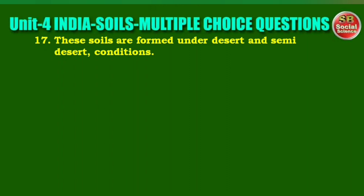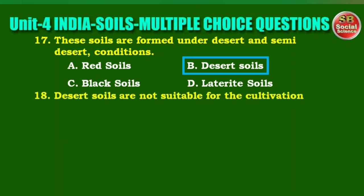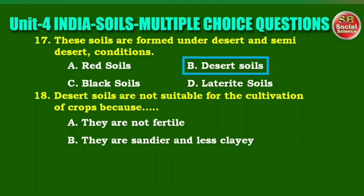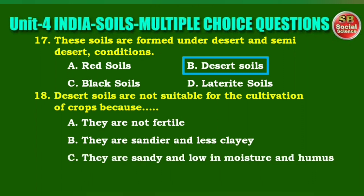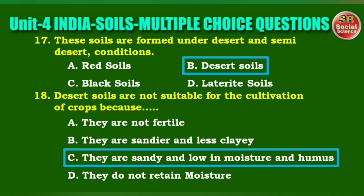Next question: the soils that are formed under desert and semi-desert conditions. Options are: red soils, desert soils, black soils, laterite soils. The right answer is option B, desert soils. Next question: desert soils are not suitable for the cultivation of crops because. Options are: they are not fertile; they are sandier and less clay; they are sandy and low in moisture and humus; they do not retain moisture. The right answer is option C, they are sandy and low in moisture and humus.